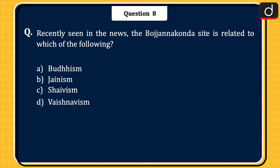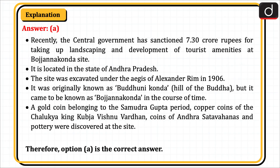The next question, recently seen in the news: the Bojana Konda site is related to which of the following — Buddhism, Jainism, Shaivism, or Vaishnavism? The correct answer is option A, Buddhism. Recently, the central government sanctioned ₹7.30 crore for landscaping and development of tourist amenities at the Bojana Konda site. It is located in Andhra Pradesh and was excavated under the aegis of Alexander Rea in 1906. It was originally known as Budhuni Konda (hill of the Buddha). A gold coin of the Samudragupta period, copper coins of Chalukya king Kubja Vishnuvardhana, coins of Andhra Satavahanas, and pottery were discovered at the site. Therefore, option A is the correct answer.